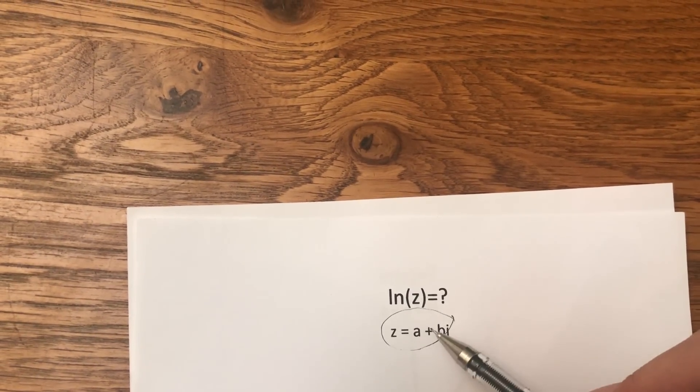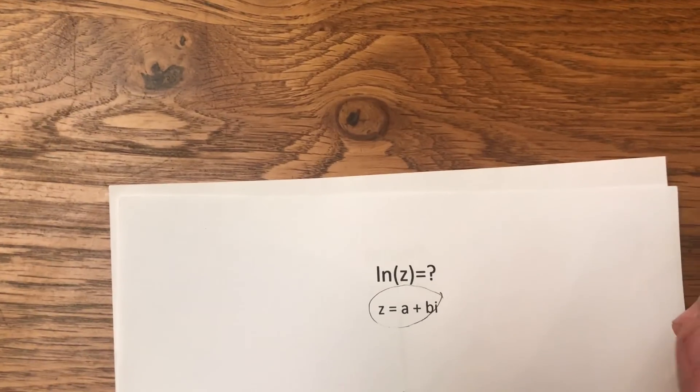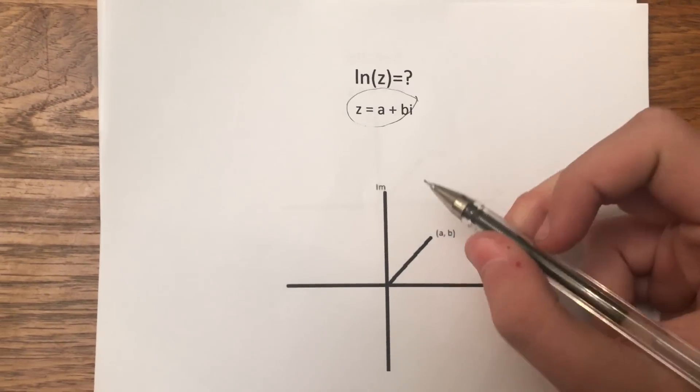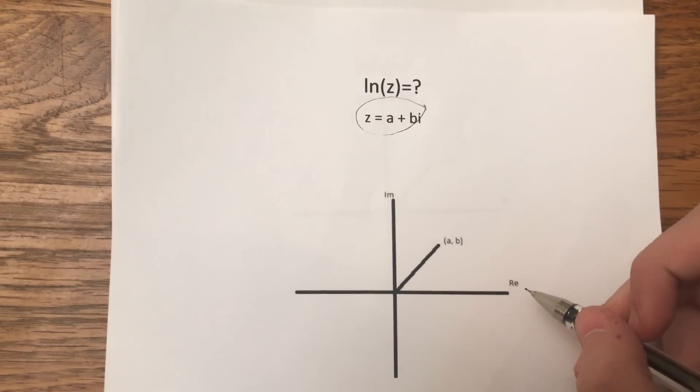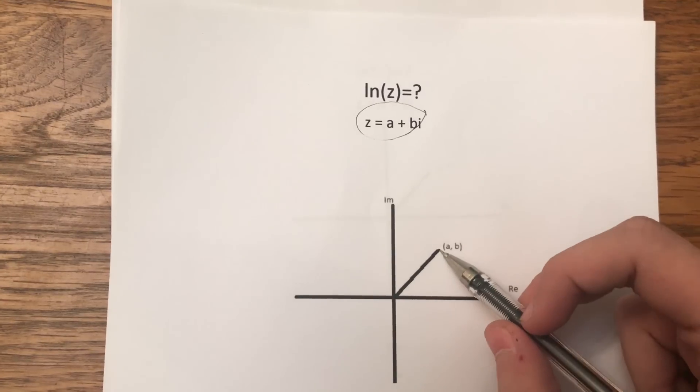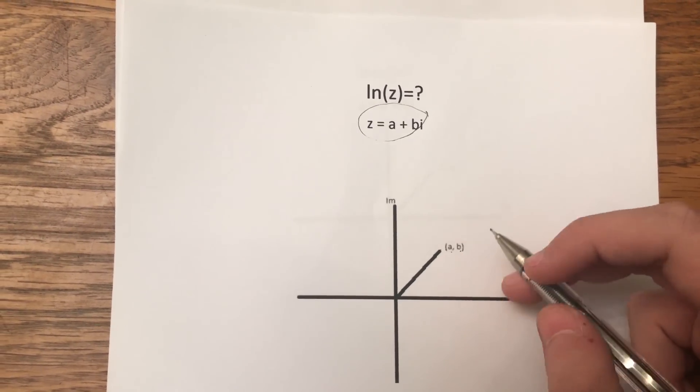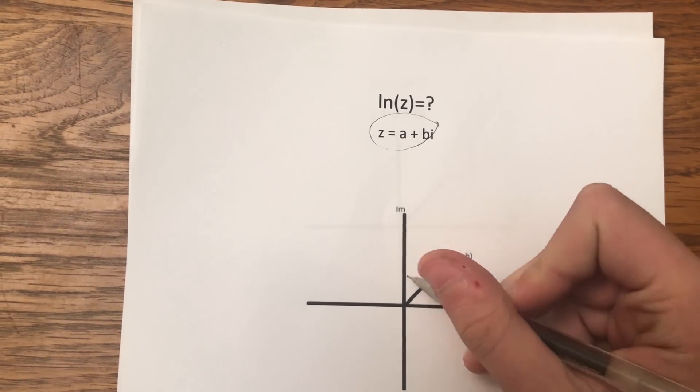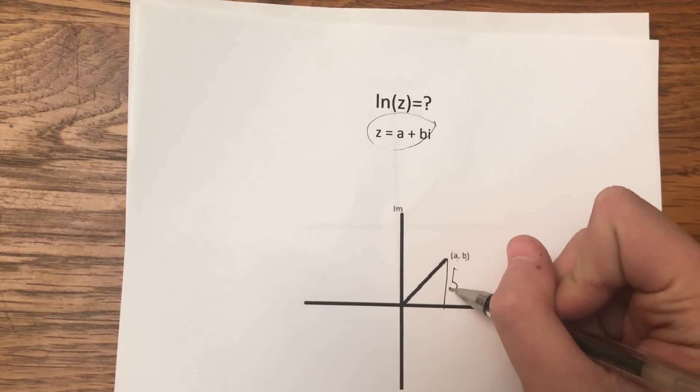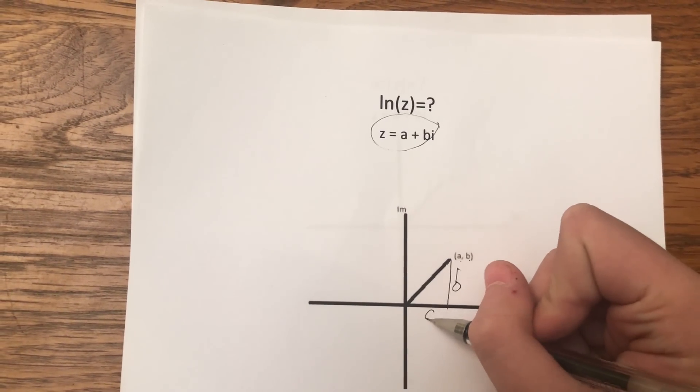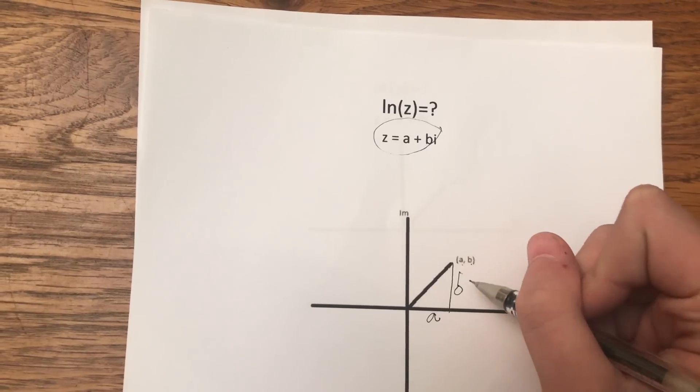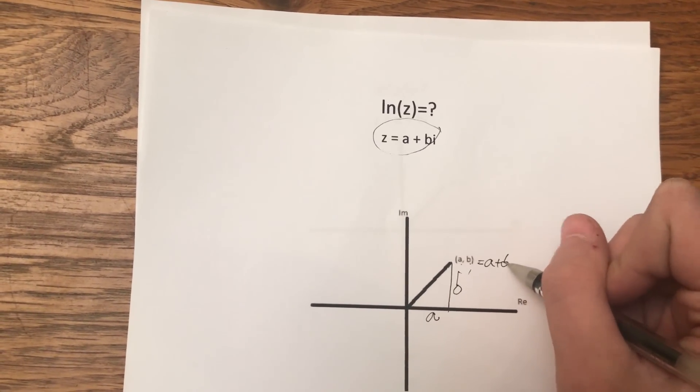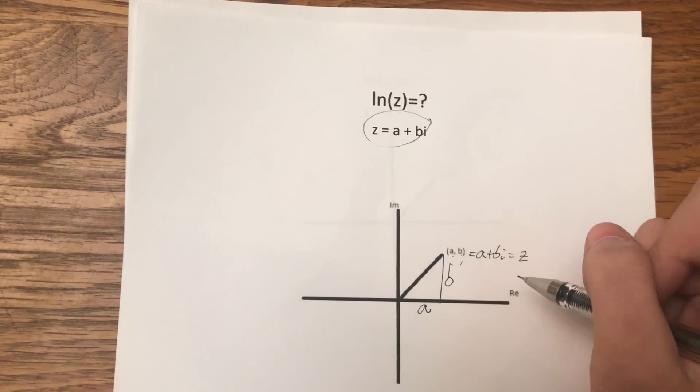So z equals a plus bi. Let's try to plot z on the complex plane. Okay, so we have the imaginary axis and the real axis. Here is the point which corresponds to this distance b on the imaginary axis and this distance a on the real axis. It's obviously equal to our number a plus bi, which is z.